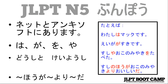JLPT N5文法。N5の文法のリストがありません。しかし、昔の4級の文法リストもいいリストでしょう。ネットとアンキーソフトでこのリストがあります。わ、が、お、やを使う文法があります。動詞や形容詞を使う文法があります。 — There is no official N5 grammar list, but the old 4-kyuu grammar list is a good one. You can find this list online and in Anki. Grammar includes particles like wa, ga, o, ya, and grammar using verbs and adjectives.